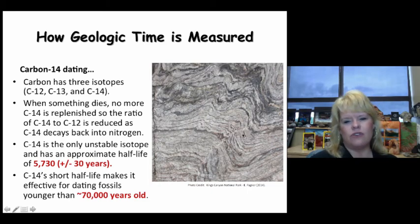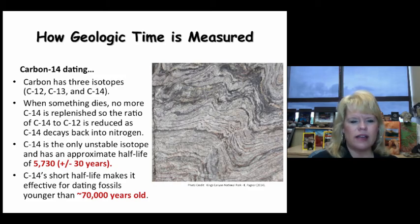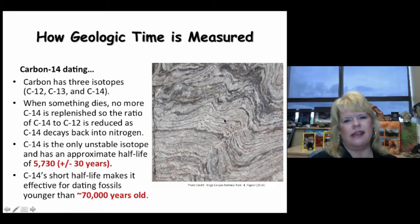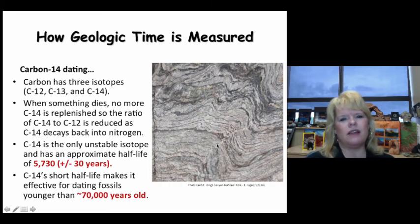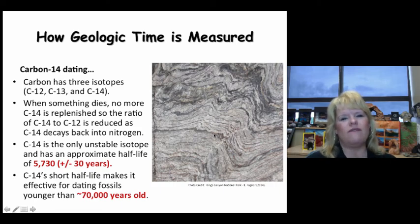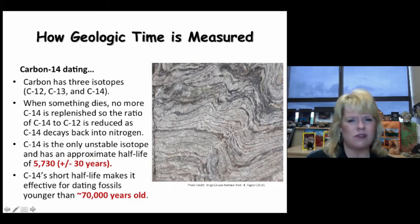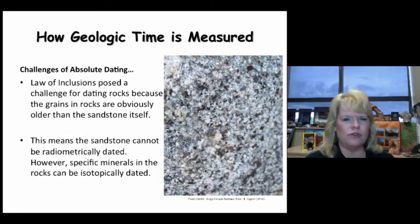You can't date carbon-14 for anything older than 70,000 years. So if I'm looking at a rock from the Cretaceous period near Sequoia National Forest with a fossil in it, there's no way I could date it with carbon-14 — it's too old and the wrong rock type. I'd need to use something like uranium or potassium isotopes. You have to choose the right isotopic clock to date rocks.